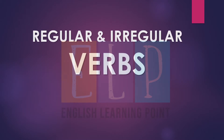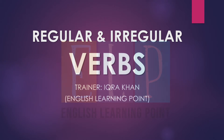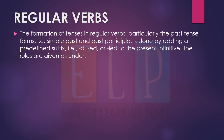Bismillah, Assalamu Alaikum. I am your trainer Ikra Khan and I am here with a new topic. These are regular and irregular verbs. In my previous videos I taught you about transitive and intransitive verbs, state and action verbs. An action is called a verb — like go, went, gone; ring, rang, rung; come, came, come. These all are verbs, and they have second and third forms too.